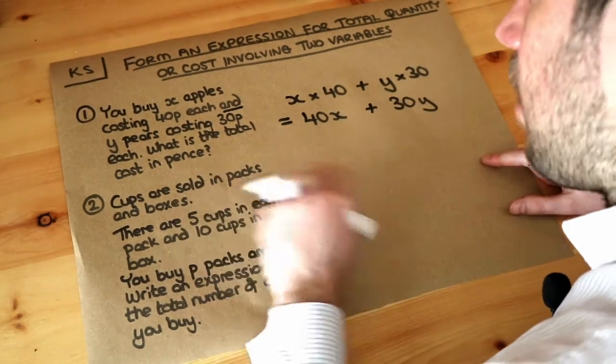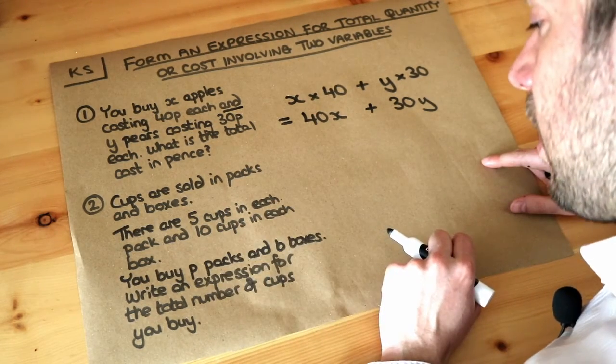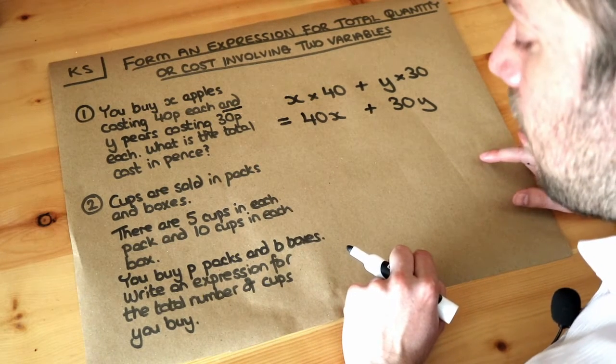We've got a similar thing here. Cups are sold in packs and boxes. There are five cups in each pack and 10 cups in each box. You buy p packs and b boxes. Write an expression for the total number of cups you buy.